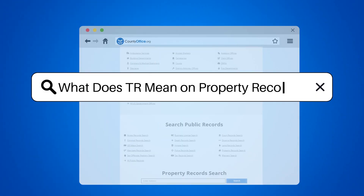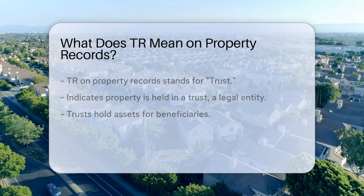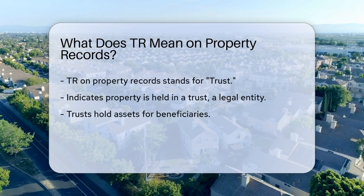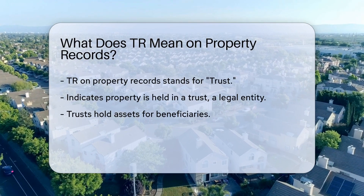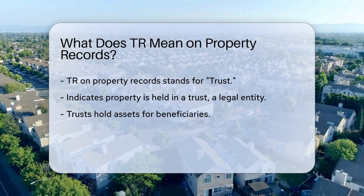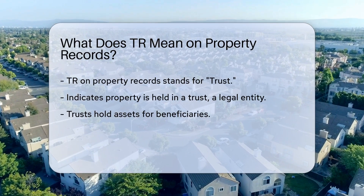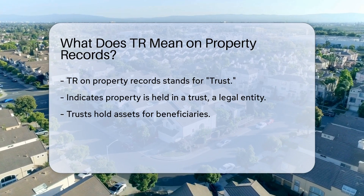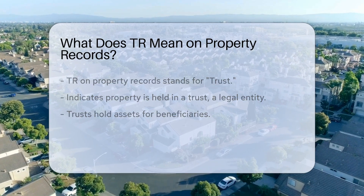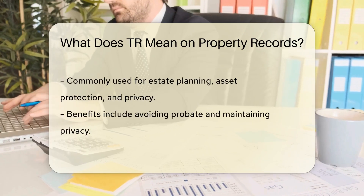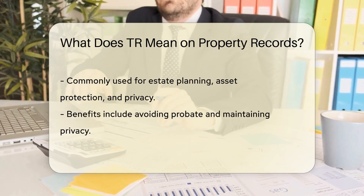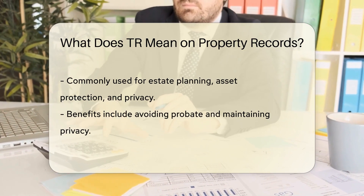What does TR mean on property records? TR on property records stands for trust. When you see TR listed on a property document, it indicates that the property is held in a trust, a legal entity that holds assets on behalf of a beneficiary. Trusts are commonly used for estate planning, asset protection, and privacy.